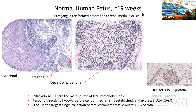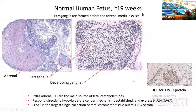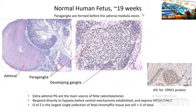In that role, extra-adrenal paraganglia express a number of transcription factors called hypoxia-inducible transcription factors, one of which is known as HIF2-alpha or EPAS1, which plays a particularly important role in the development of a family of paraganglionic tumors. The organ of Zuckerkandl, which has a catchy name, is the largest single collection of fetal chromaffin tissue, but it should be remembered that it still comprises less than one half of the total according to Rex Copeland.